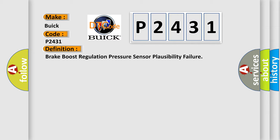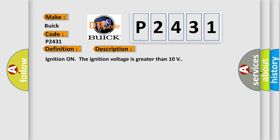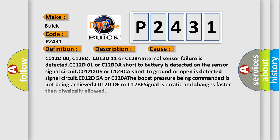And now this is a short description of this DTC code. Ignition on, the ignition voltage is greater than 10 volts. This diagnostic error occurs most often in these cases: